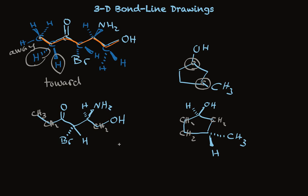The bond line convention for drawing structures can be easily modified using wedges and dashes — this is a convention that works well for showing spatial orientations of atoms in molecules. We will use it repeatedly because spatial orientations are often very important.